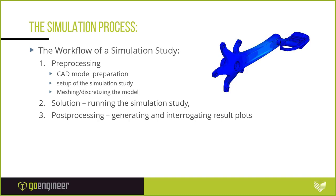There's a process for running a simulation. We start with pre-processing the model, which includes simplifying it. In industry, a design team creates the model for manufacturing and hands it to the analyst. You don't want to run simulation on the model as-is with all the detail — that takes too much computational power. As an engineer, you want to identify what parts of the model are essential for the structural response and remove small fillets, embosses, logos, and other minutia.